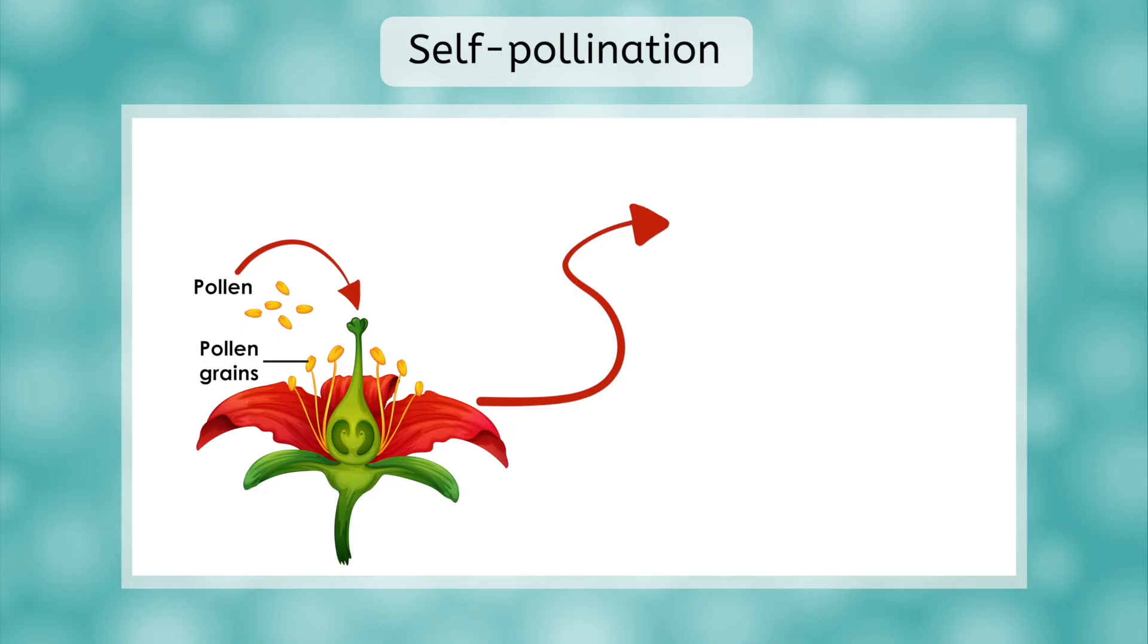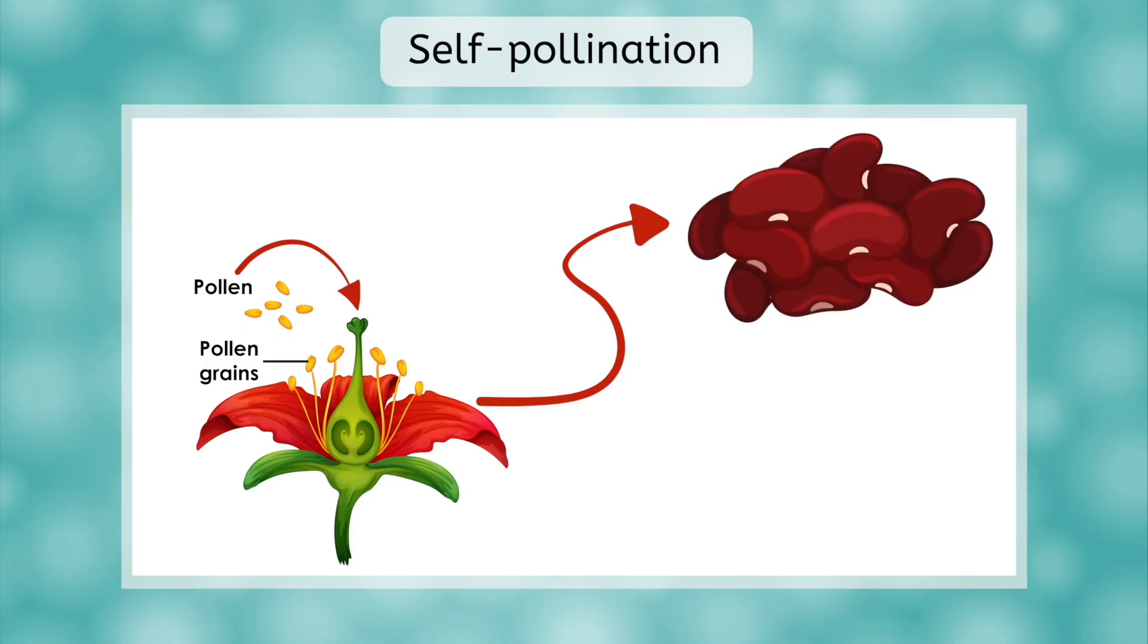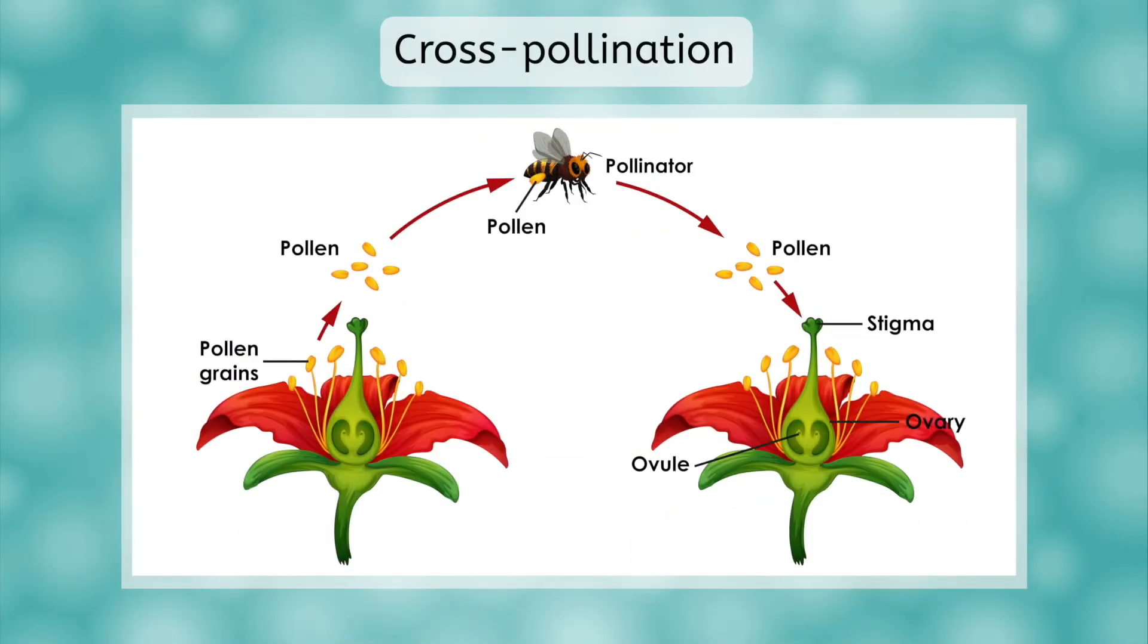So both gametes that fuse to form the seeds could come from the same parent plant. But plants are adapted to prefer cross-pollination with other plants, as this helps introduce more variety into the population and species.